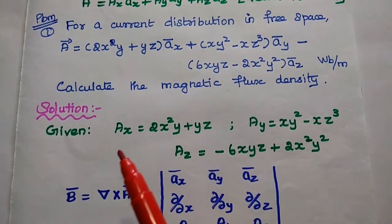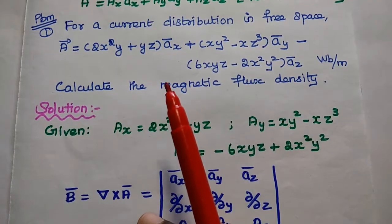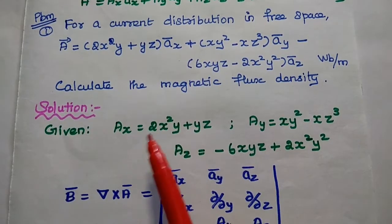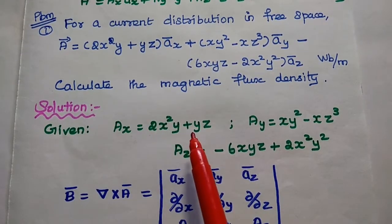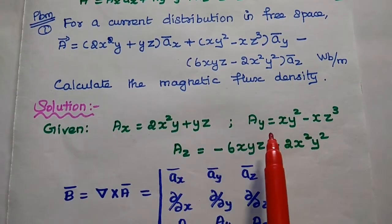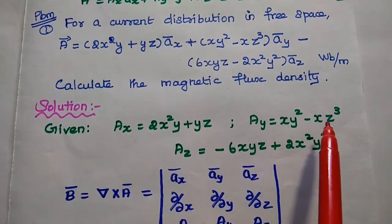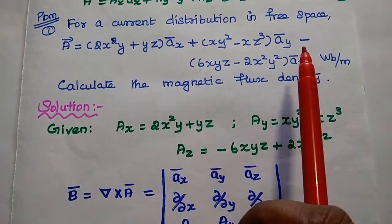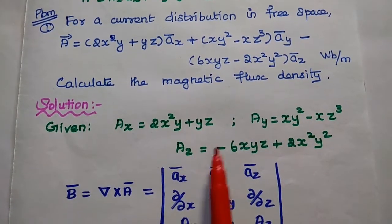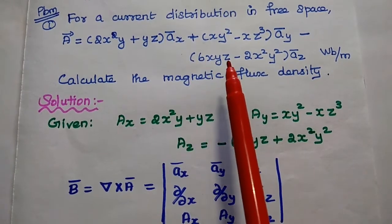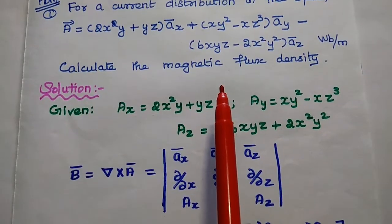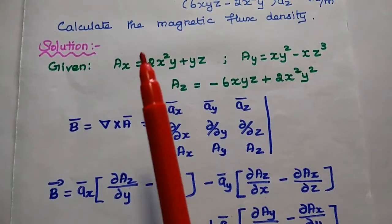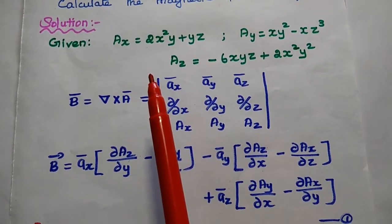In the solution part, we write the given data. The vector potential components are: Ax = 2x²y + yz, Ay = xy² − xz³, and for Az we note the minus sign, so multiplying through gives Az = −6xyz + 2x²y².